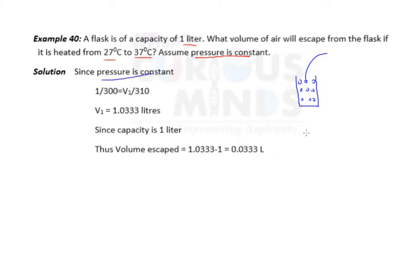Since pressure is constant, we can apply this formula: V1 by T1 is V2 by T2. If pressure is constant and even the amount is constant, the number of molecules will be same.